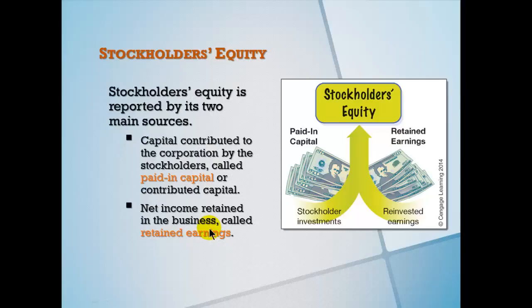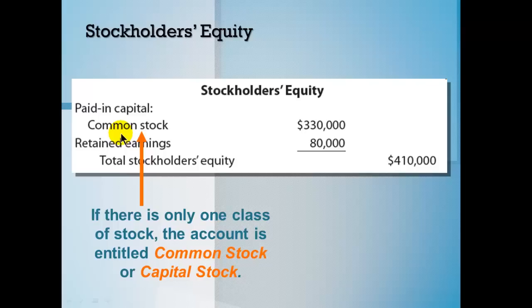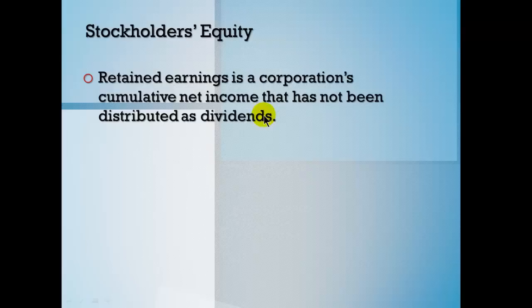Net income is retained in the business — that's how retained earnings is defined. I would define retained earnings as the cumulative net income or net loss since the business started, net of dividends paid. You could have a retained deficit. This is a simplified look at the shareholders' equity section: paid-in capital plus retained earnings equals total stockholders' equity. With one class of stock — common stock, also called capital stock — there can also be preferred stock, which we'll get into later.